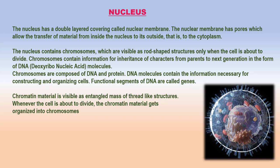Ribosomes are helpful in protein synthesis in the cytoplasm. The chromatin material is a thin, thread-like intertwined mass composed of the genetic substance DNA (deoxyribonucleic acid) and proteins. Chromatin is formed of repeating subunits called nucleosomes, each of which has a DNA molecule coiled around a disk of histones. DNA stores all the information necessary for the cell to function, to grow, and to reproduce. Distinct segments of DNA are called genes. The chromatin is condensed into thick ribbon-like chromosomes during cell division.